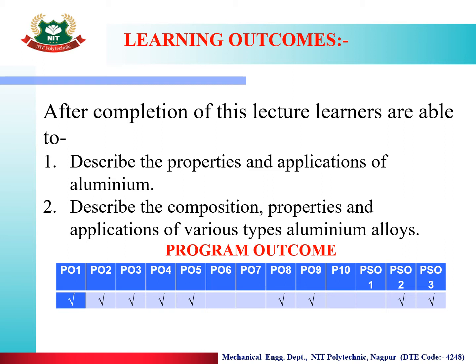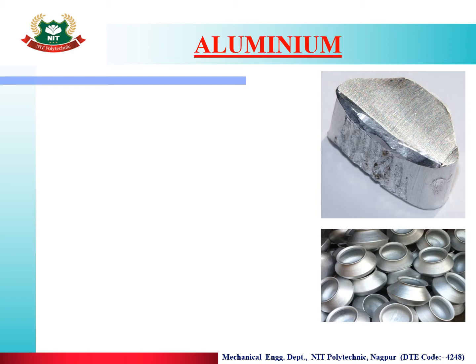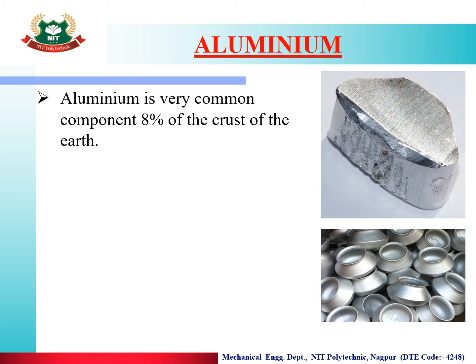We are going to start with Aluminium. Aluminium, as you all know, is a very common component and makes up 8% of the crust of the Earth.